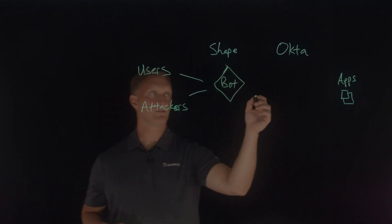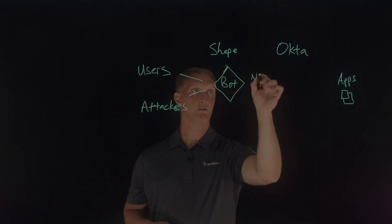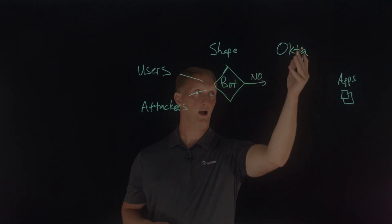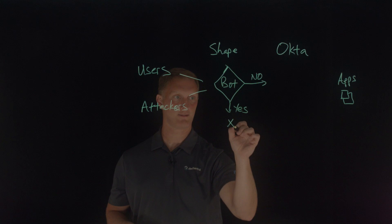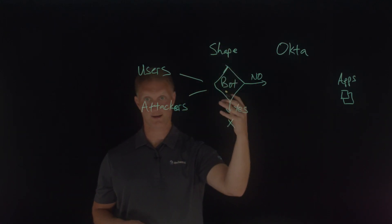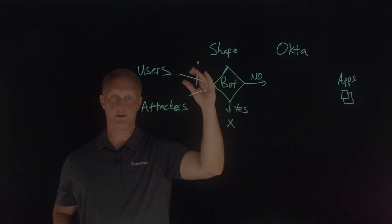And if the answer is no, this is not a bot, then it comes on through to the Okta portion. If it's a yes, then we block that user, or Shape would automatically block that user.